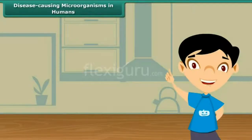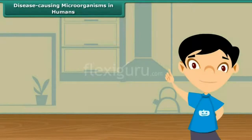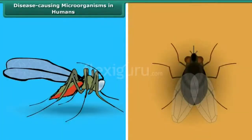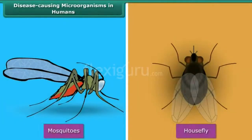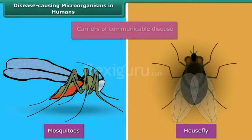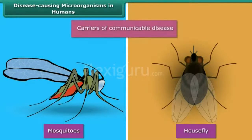Some insects and animals found in our surroundings act as carriers of pathogens. Housefly and mosquitoes are common examples of such carriers.